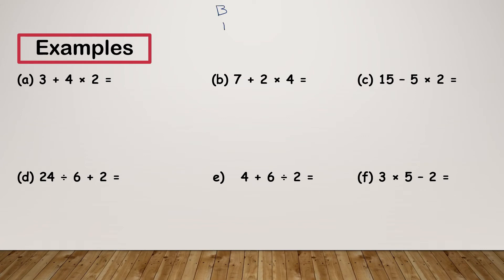I'm just going to jot BIDMAS at the top of the screen to remind myself the order of operations. On these ones I haven't got any brackets or indices — we'll look at those next — so I'm just concentrating on the bottom four. My first example is 3 plus 4 multiplied by 2. Multiplication is before addition in BIDMAS, so I need to do that first. 4 times 2 gives me 8, and I write my working underneath my original so that the 3 carries down, making the sum 3 plus 8, which gives me 11.